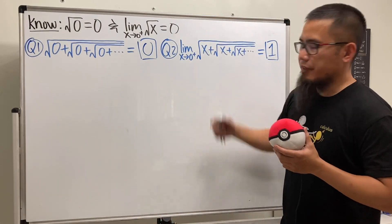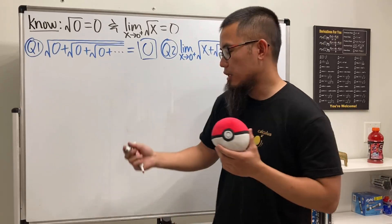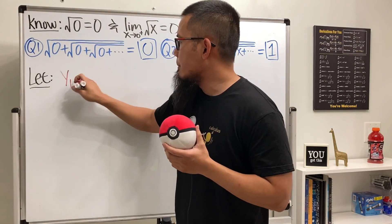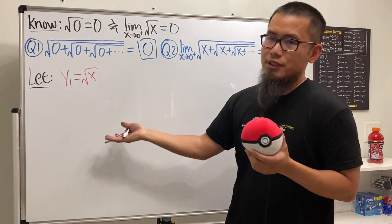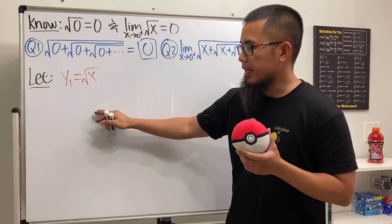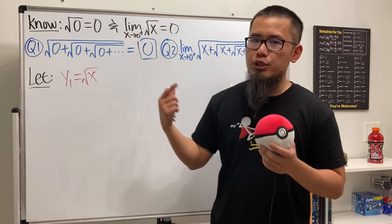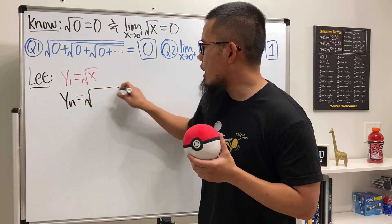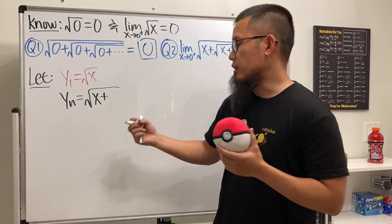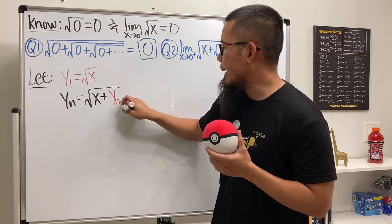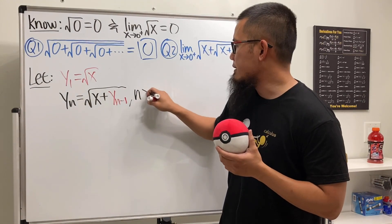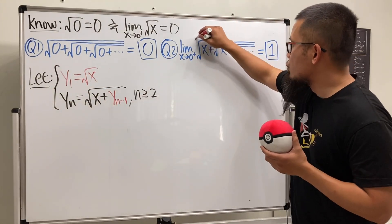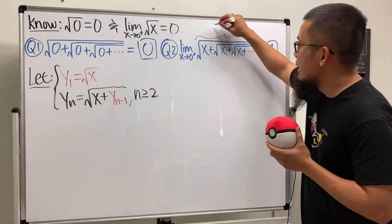In order to make sense of this, we define a sequence of functions. Let y₁ be just √x, then y₂ = √(x + √x), and we can define this recursively: yₙ = √(x + yₙ₋₁) for n greater than or equal to two. The infinite nested square root expression is precisely the limit as n goes to infinity of yₙ.